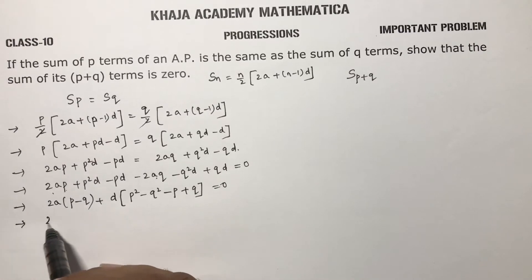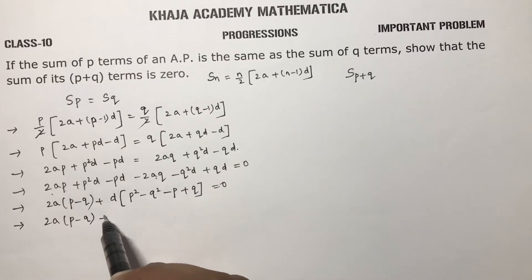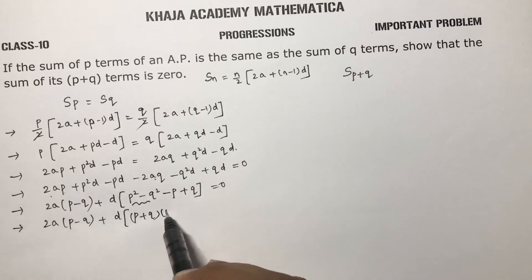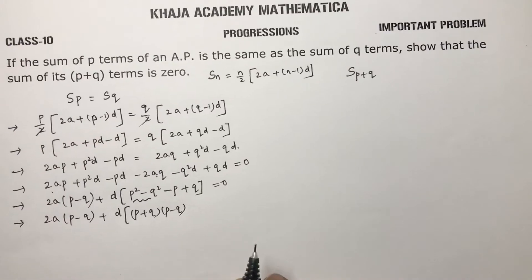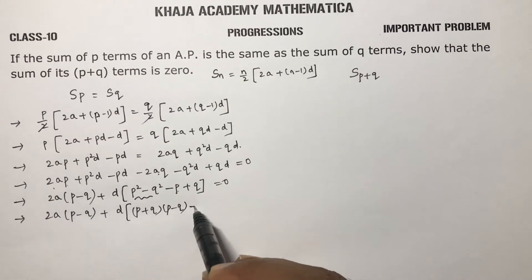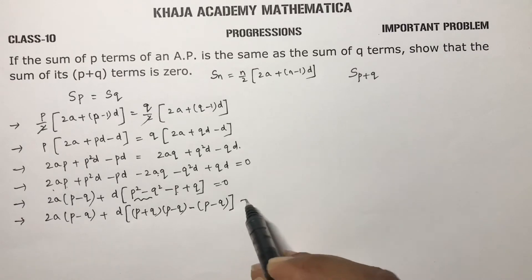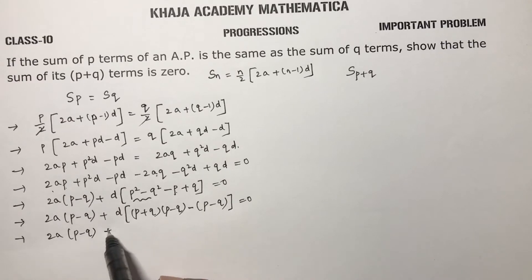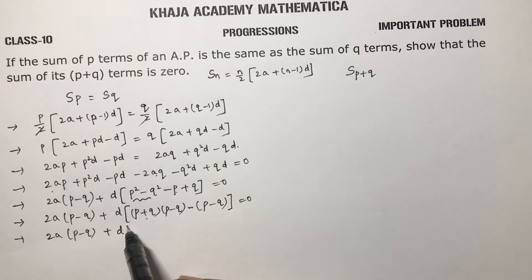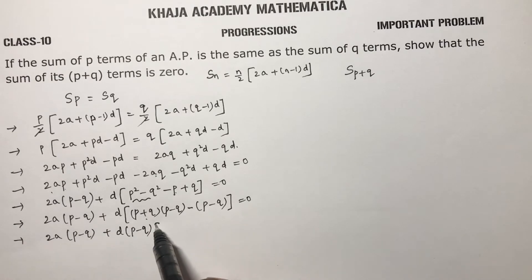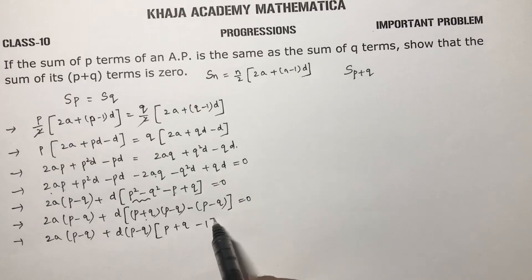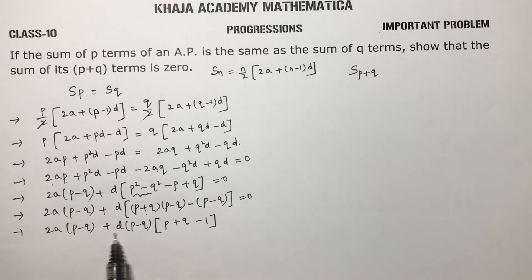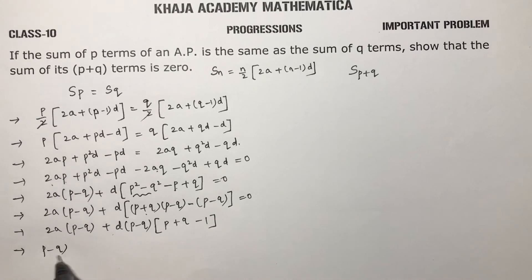This step is a little bit important. We have 2a into p minus q, plus d times p squared minus q squared minus p plus q. Now p squared minus q squared can be written as p plus q into p minus q, because a squared minus b squared equals a plus b into a minus b. So in both terms we can take p minus q common, leaving p plus q minus 1.